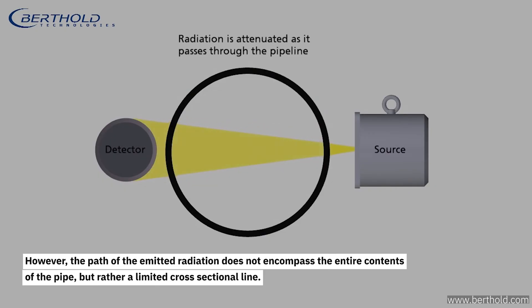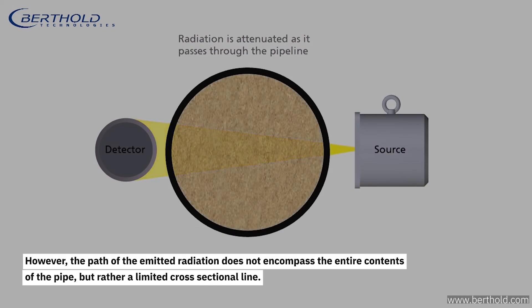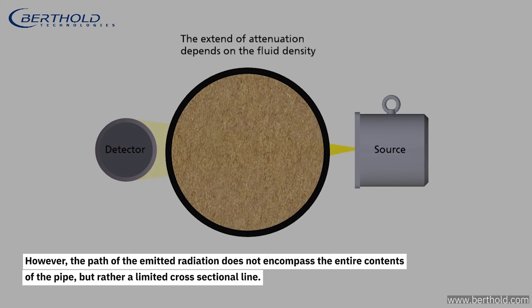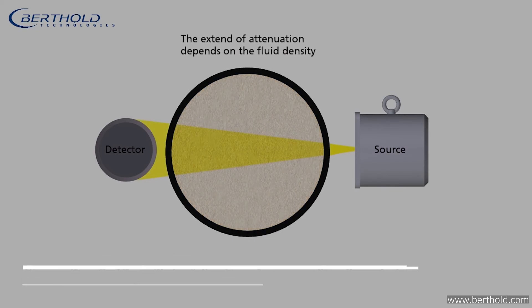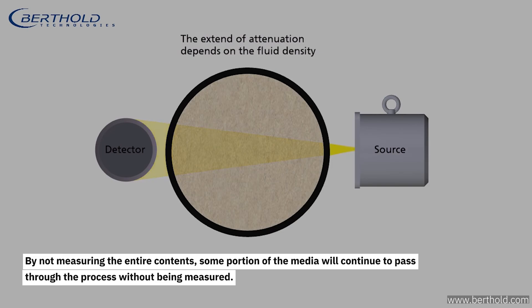However, the path of the emitted radiation does not encompass the entire contents of the pipe, but rather a limited cross-sectional line. By not measuring the entire contents, some portion of the media will continue to pass through the process without being measured.